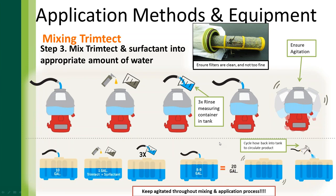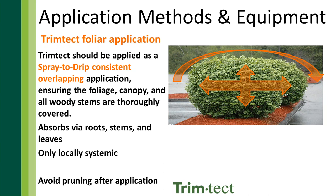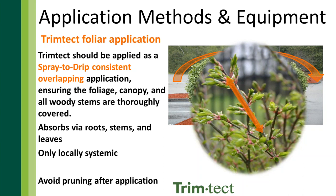Now that we've mixed correctly, it's time for the actual application. TrimTech is meant as a foliar application and needs to be applied as a spray-to-drip application — full and even coverage on the plant. It's only locally systemic, so you need to spray every part of the plant you want to have growth regulation on. TrimTech is taken up best by succulent stems — the green stems, not necessarily brand new growth, but the newest growth. What we're doing when spraying to drip is coating those green stems.